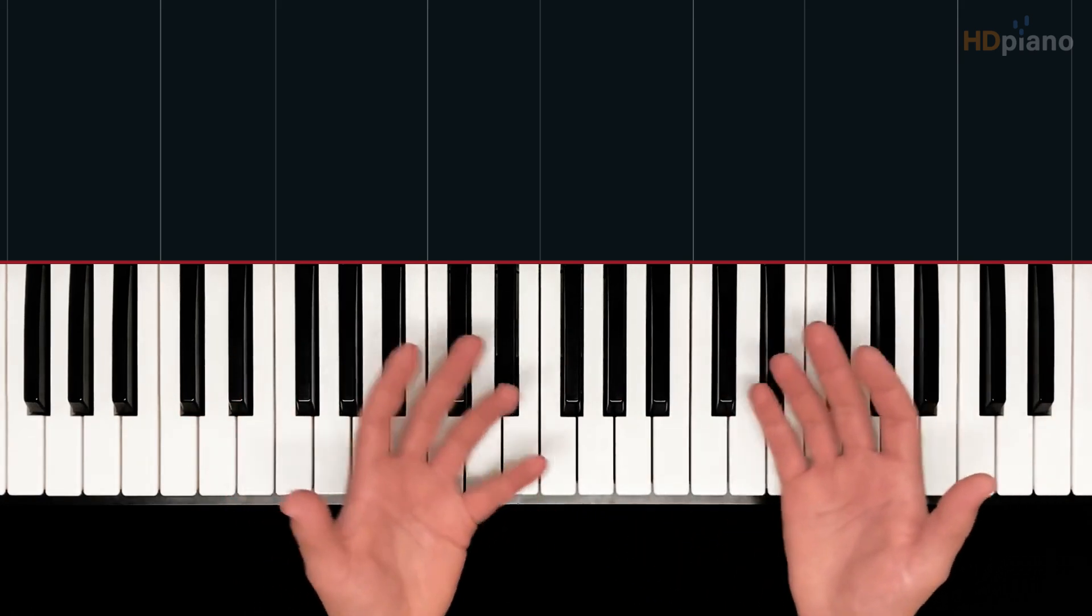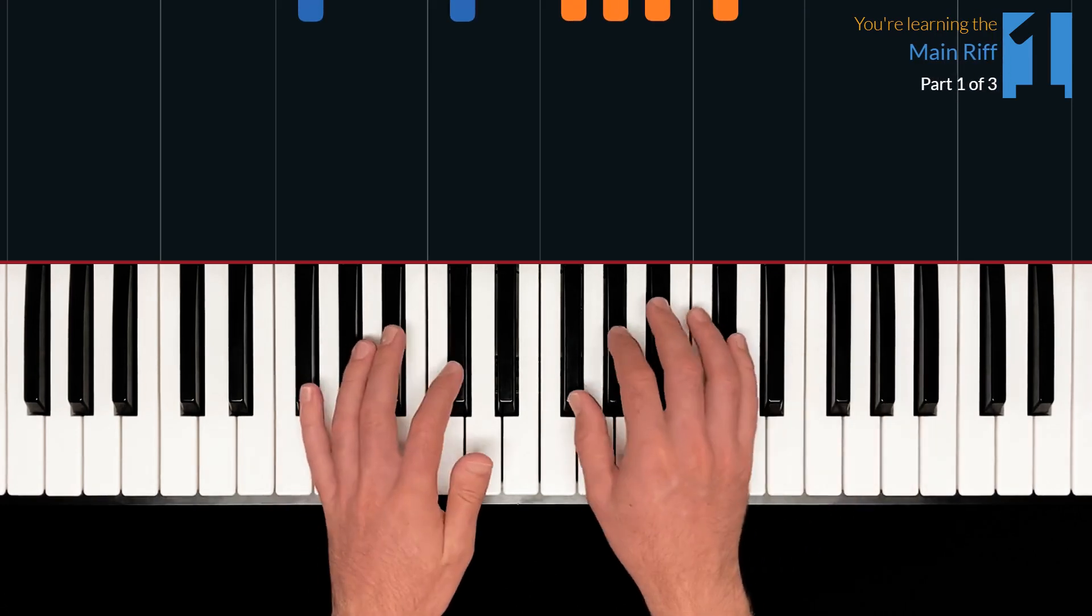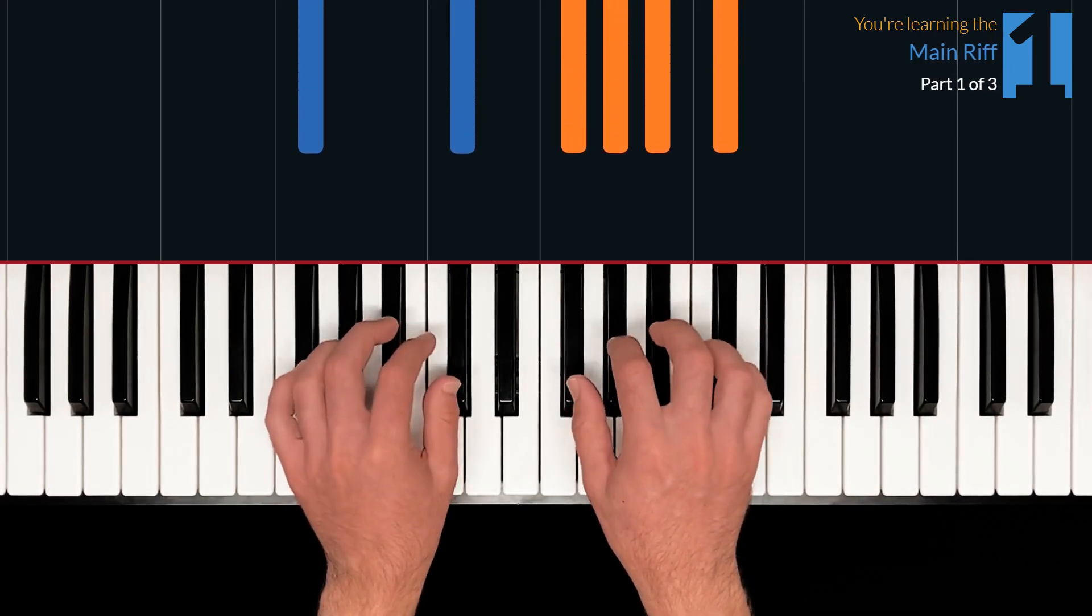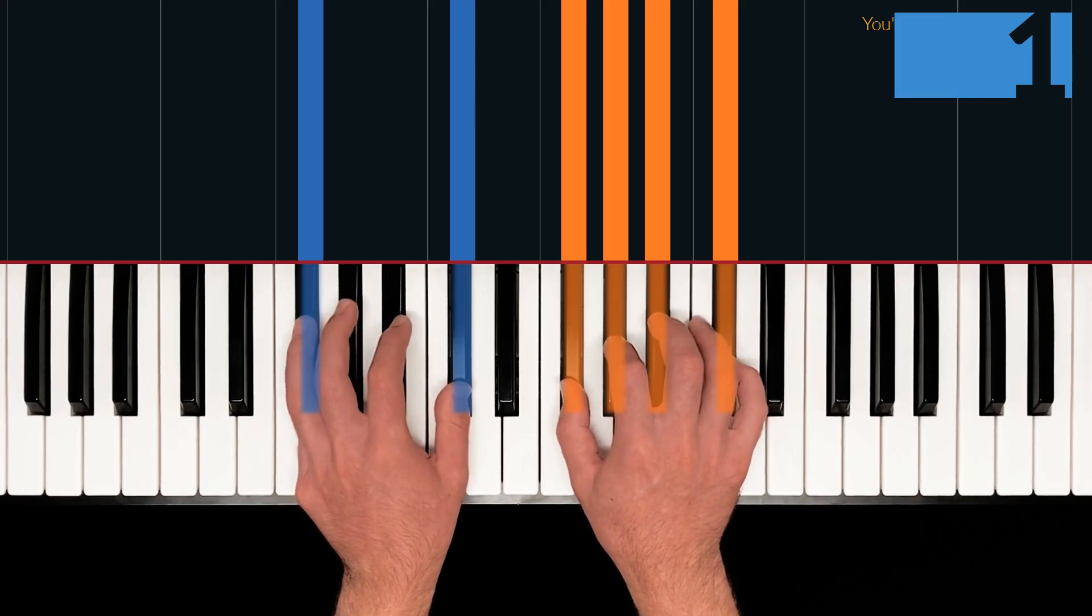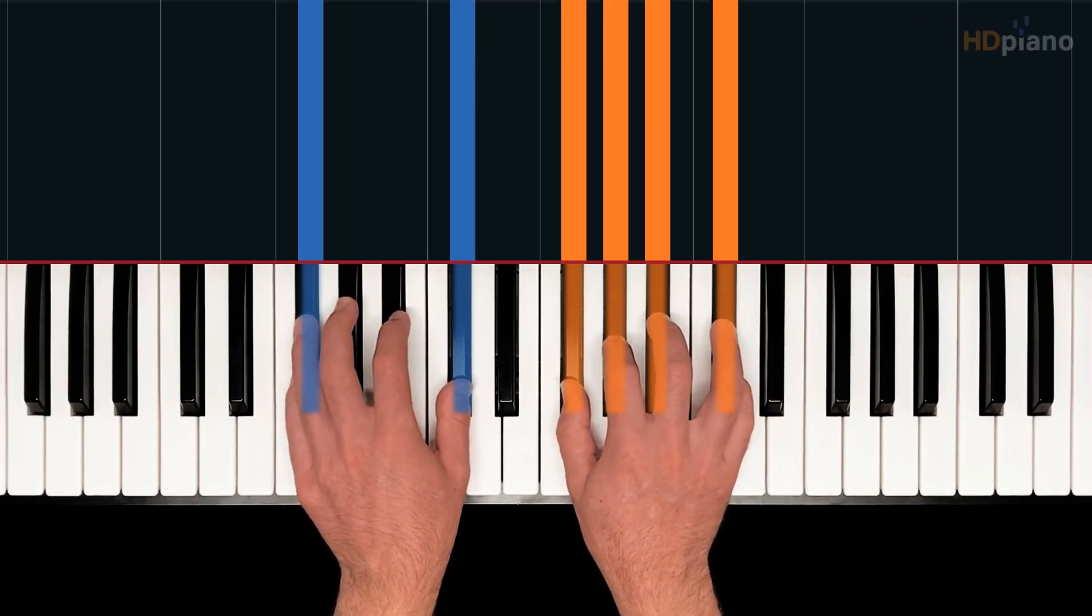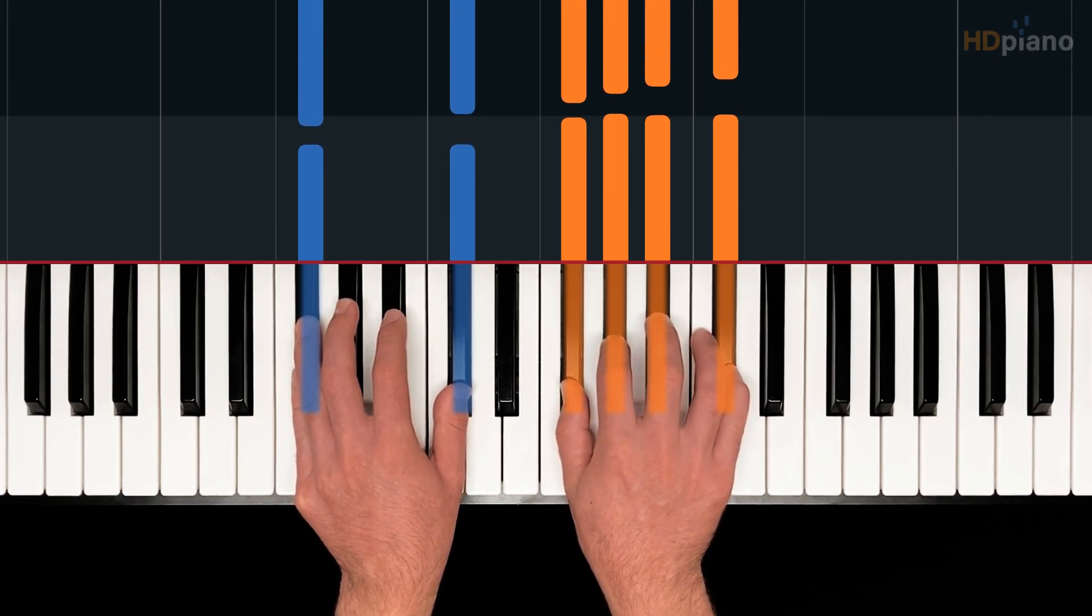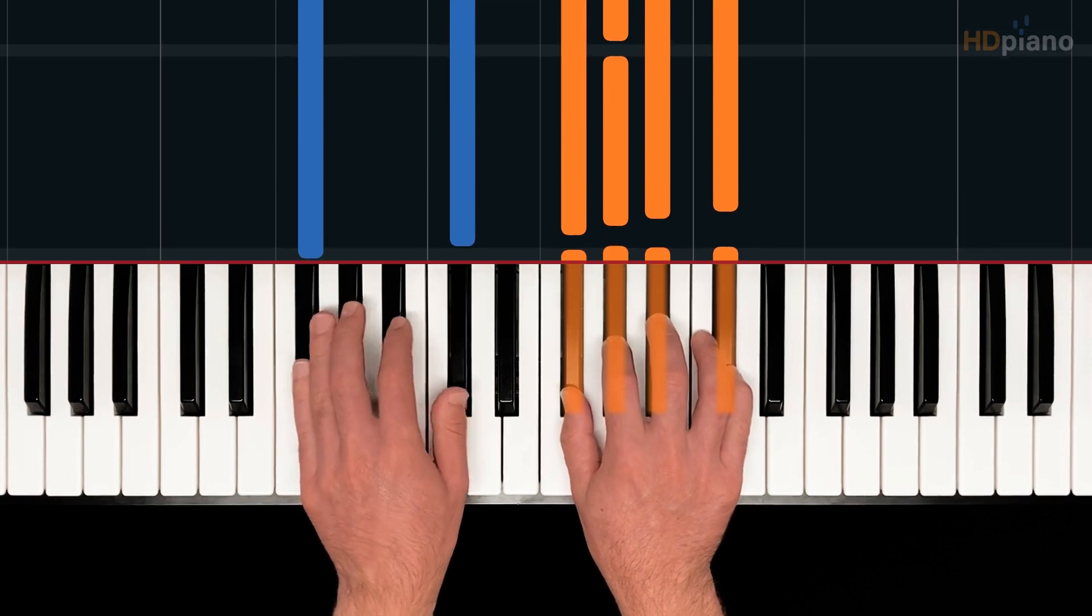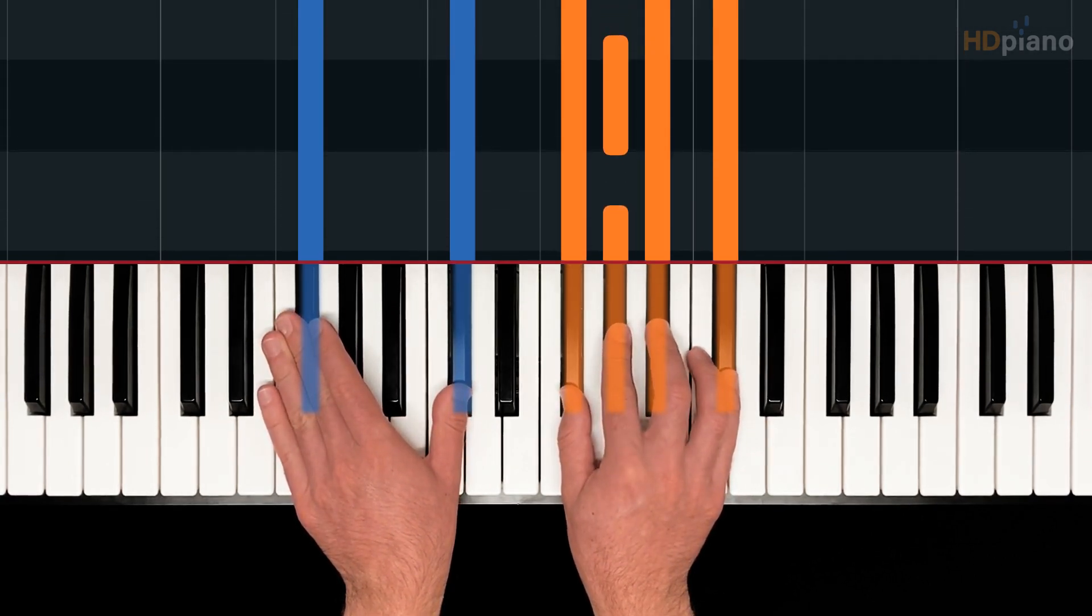So you notice we have a lot of black keys in this song. And it's a great song to learn if you're ever intimidated by black keys. Because I want you to notice that they're really easy to play physically. And I actually like to talk about how they're the landmarks of the piano keyboard. They're really how we find our way around. So we're starting on this G flat major chord. And it's a G flat add two chord.